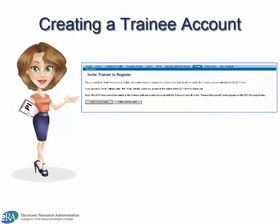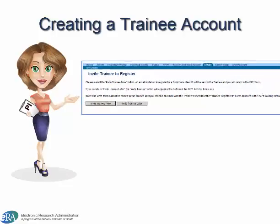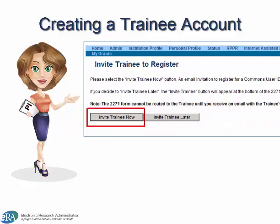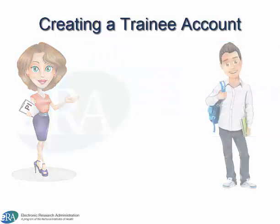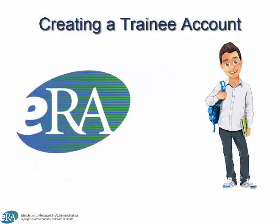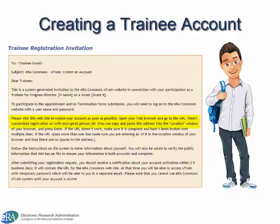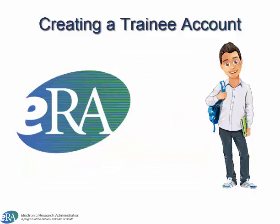With the PI's portion of the PHS-2271 form completed, the PI can choose to invite the trainee by clicking the Invite Trainee Now button. This triggers eRA Commons to send an email to the trainee using the email address provided by the PI. The email provides specific instructions on how to complete the registration and account creation process.